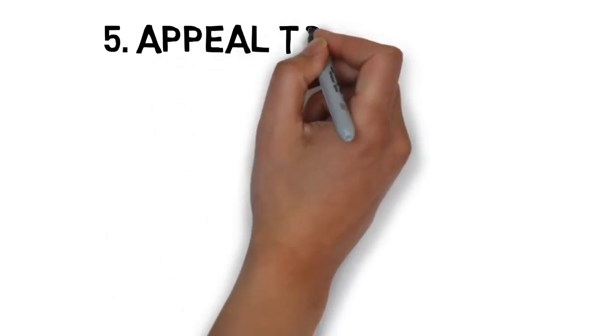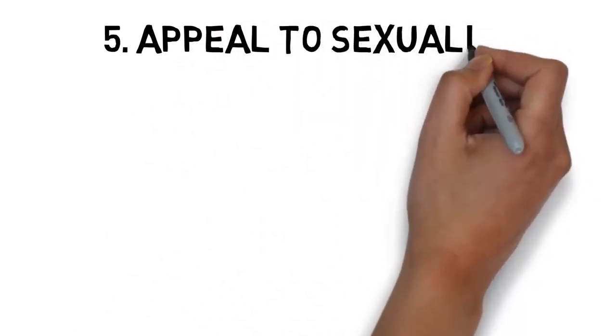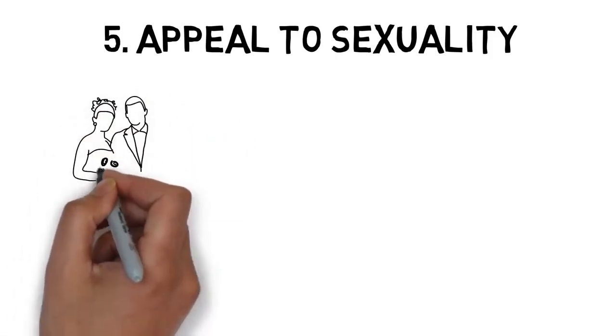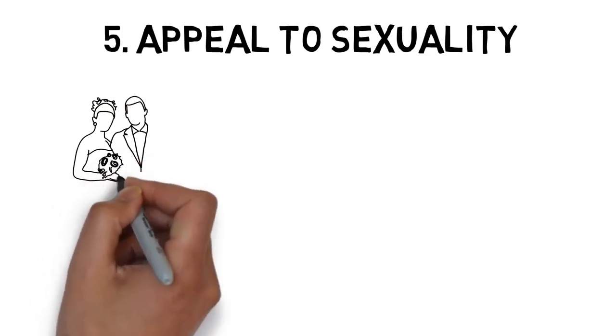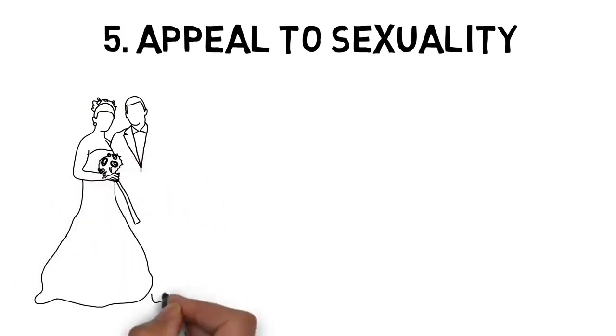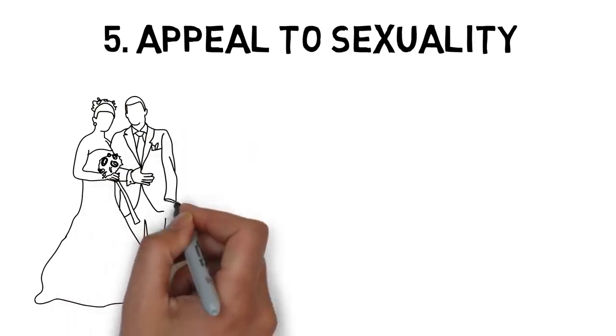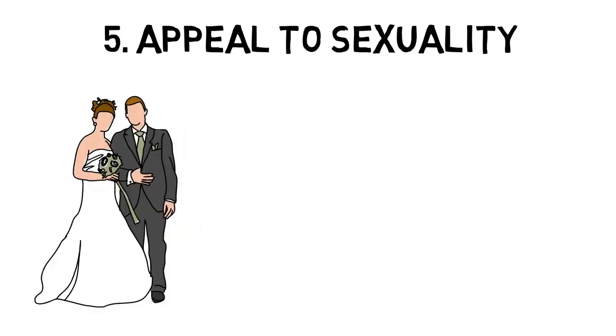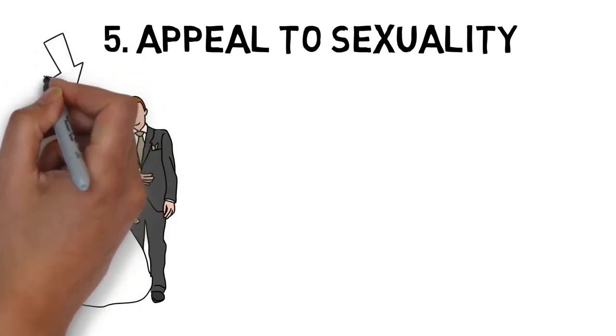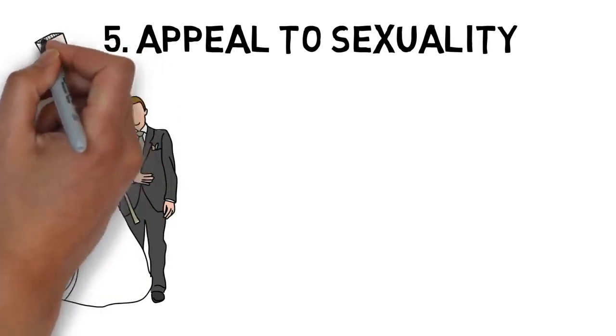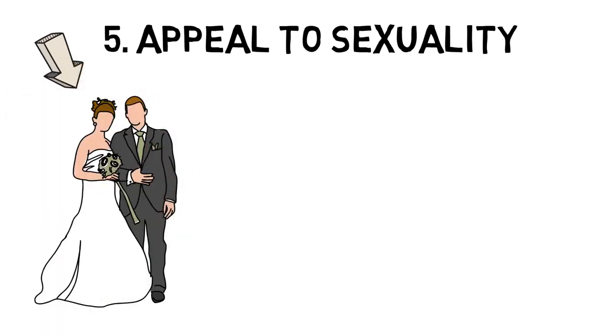Number 5: Appeal to Sexuality. This persuasion technique is based off of one very simple biological concept: the motivation in every animal to reproduce. Thus, appealing to sexuality, in its purest form, simply means using this animal motivation to get exactly what you want. Since this is a natural motivation, ingrained in the brain of every single animal, it's very hard to control. And that is what makes it so effective.